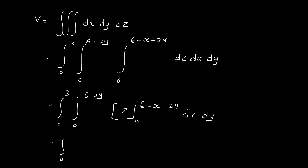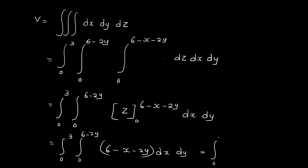Integrating dz from 0 to 6 minus x minus 2y gives: integral 0 to 3, integral 0 to 6 minus 2y of (6 minus x minus 2y) dx dy. Integrating with respect to x: 6x minus x squared by 2 minus 2xy, evaluated from 0 to 6 minus 2y, then dy.